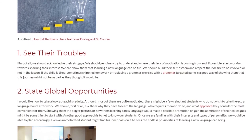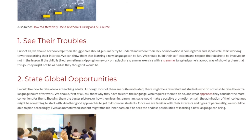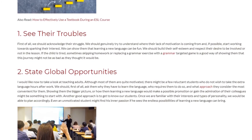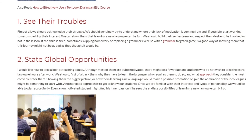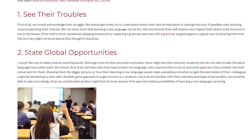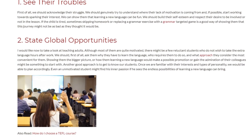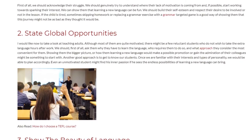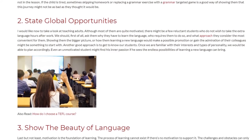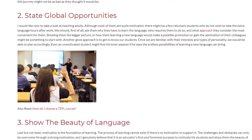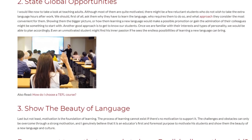State Global Opportunities. When teaching adults, although most of them are quite motivated, there might be a few reluctant students who do not wish to take extra language hours after work. We should first ask them why they have to learn the language, who requires them to do so, and what approach they consider most convenient. Showing them the bigger picture — how learning a new language could lead to a promotion or gain the admiration of their colleagues — might be a good starting point. Another good approach is to get to know our students; once familiar with their interests and personality types, we can plan accordingly. Even an unmotivated student might find his inner passion if he sees the endless possibilities that learning a new language can bring.